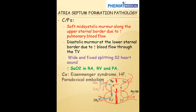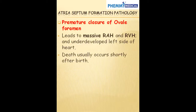Other complications include right heart failure and paradoxical embolism, which we already explained. The last pathology associated with atrial septal formation is premature closure of the foramen ovale. In utero, premature closure prevents the right to left shunting of blood, leading to massive right atrial and right ventricular enlargement. Because enough blood is not getting to the left side of the heart, that leads to an underdeveloped left side of the heart, and death usually occurs shortly after birth.